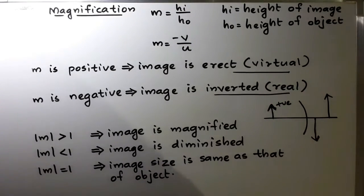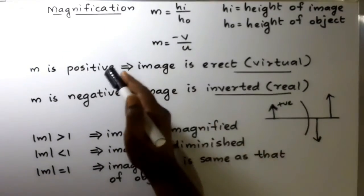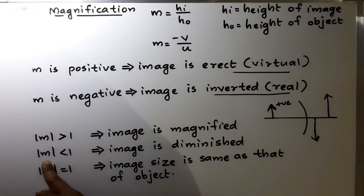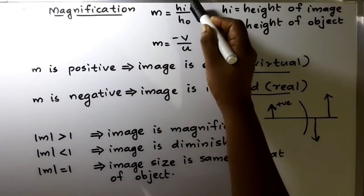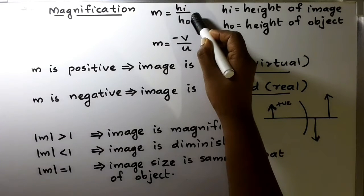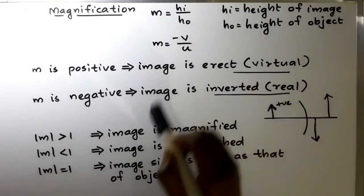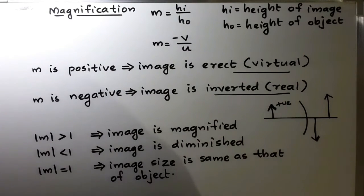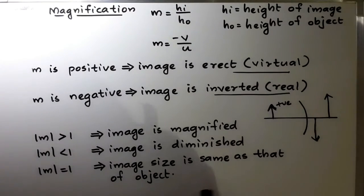If the modulus of M is less than 1 — we are just taking the magnitude, not the sign — that means Hi by Ho is less than 1, so Hi is less than Ho, meaning the image is diminished. And if the modulus of M is equal to 1, that means the image size and object size are both the same.